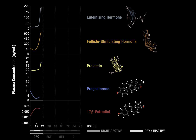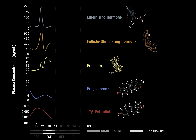The peak in follicle stimulating hormone levels signals ovulation and entry into estrus. During estrus, 17-beta estradiol levels decline and prolactin levels peak.